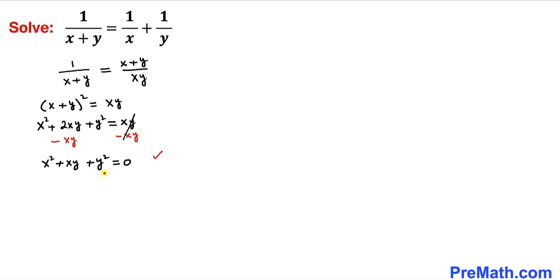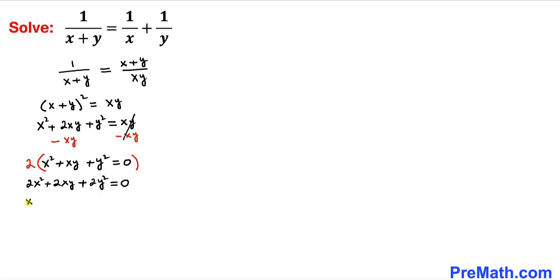At this step I am going to multiply across the board by 2, so this becomes 2x squared plus 2xy plus 2y squared equals 0. Now I'm going to split 2x squared as x squared plus x squared, keep 2xy, and split 2y squared as y squared plus y squared equals 0.